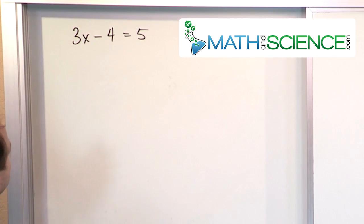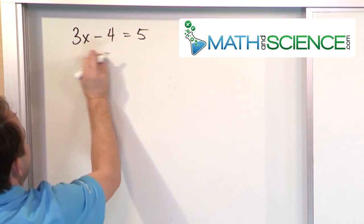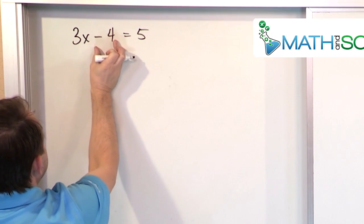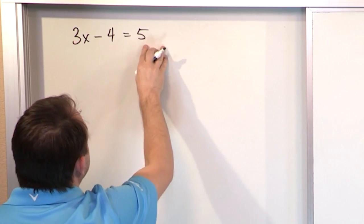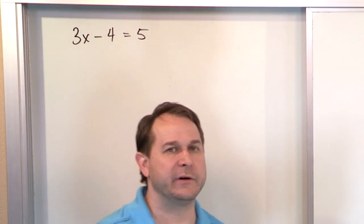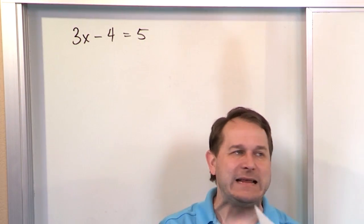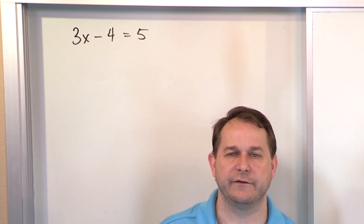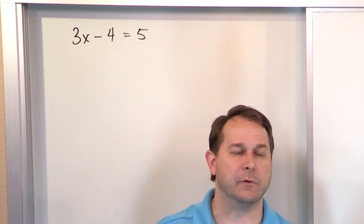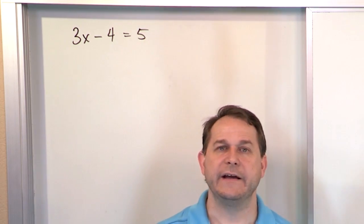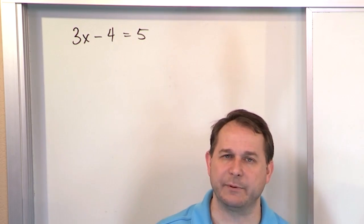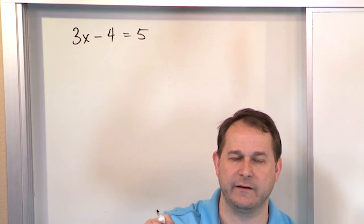The first thing you need to do is take anything added or subtracted to this term — which in this case is the negative 4 — and move them over here. As you already know from basic algebra, you can do anything you want to an equation, as far as adding, subtracting, multiplying, or dividing, as long as you do it to both sides because then the equation is still balanced.